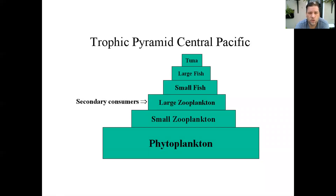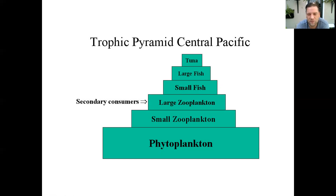Our next term is what we call a trophic pyramid — a feeding pyramid. Each level of the pyramid contains different amounts of organisms in terms of biomass. Phytoplankton are your largest biomass of the ocean. Then small zooplankton eat the phytoplankton, larger zooplankton eat the smaller zooplankton, smaller fish eat the larger zooplankton, large fish eat the smaller fish, and the biggest fish eat the smaller fish. It's a way of classifying an ecosystem and putting organisms into their individual trophic levels.